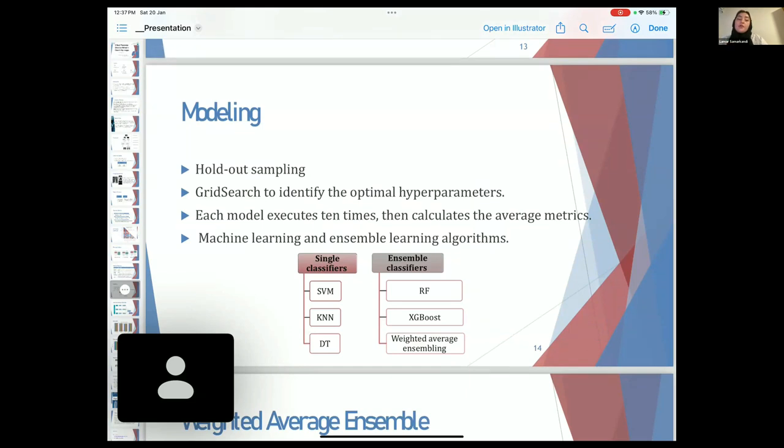Our modeling works by using a grid search to identify optimal hyperparameters. Each model executes this task 10 times, then calculates the average metrics.